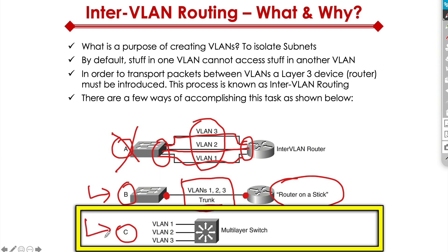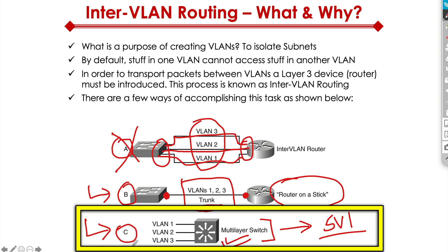What we mostly see in the real world today is if you have a multi-layer switch — and most of the newer switches are multi-layer switches — we actually have SVIs configured, which are called switch virtual interfaces. The inter-VLAN routing happens right on that switch. The traffic doesn't have to leave the switch and go through a different device. It's all about speed, efficiency, and low latency. That's the beauty of the multi-layer switch, and that's why most real-world environments today have Option C configured.